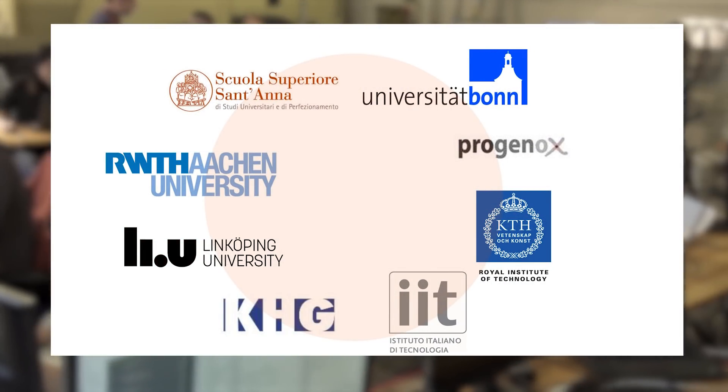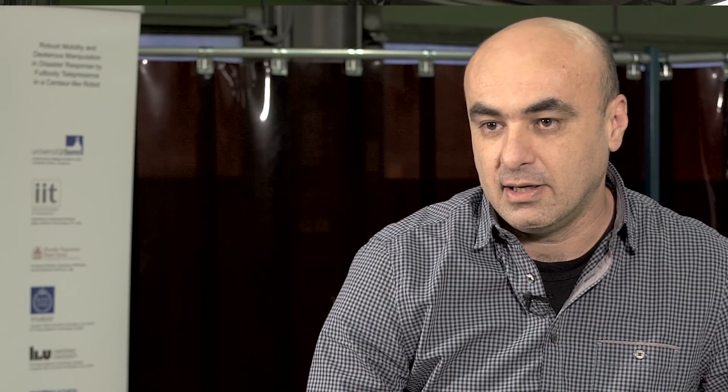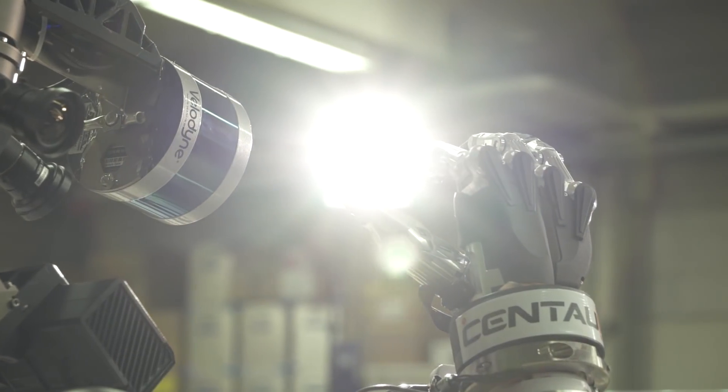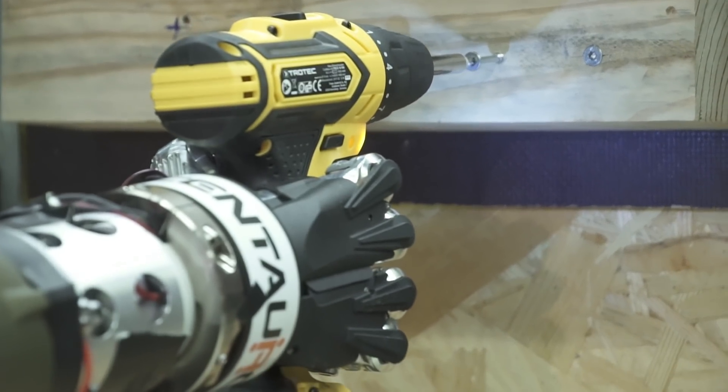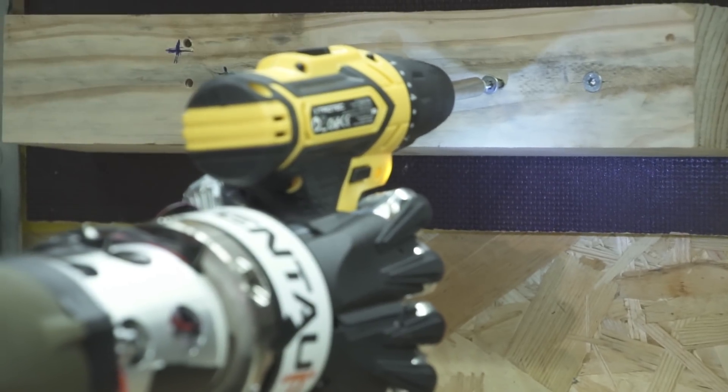The Centaur project has partners from three countries in Europe. We are one of the partners of the Centaur consortium with the main task to design and develop the hardware components in the entire platform. So basically starting from the basic components like actuators, sensors, mechanical links, we have the task to design them and then fabricate, assemble, and make the robot operational for the rest of the group to use it in the trials during the project.